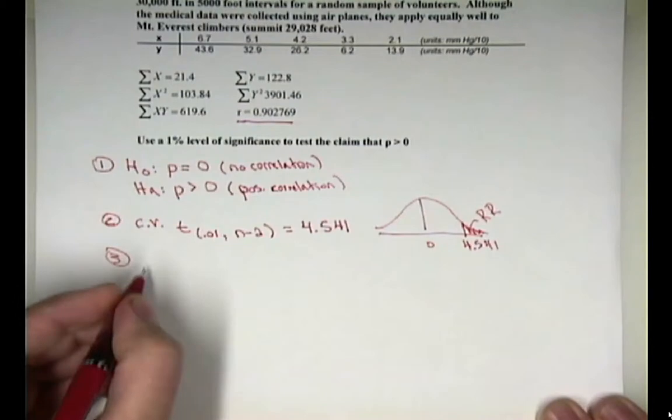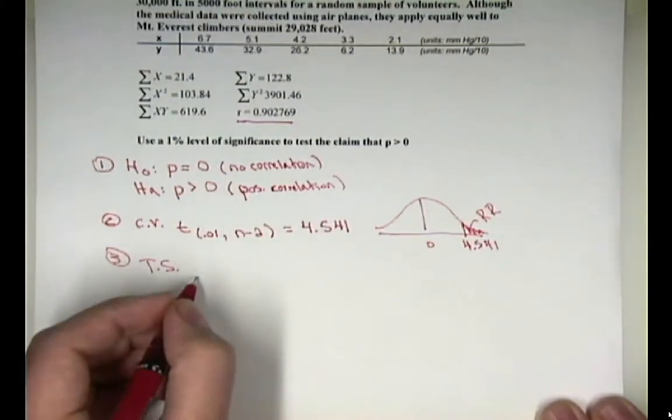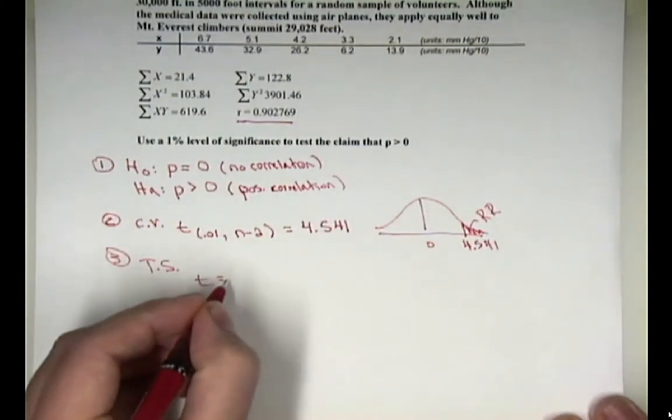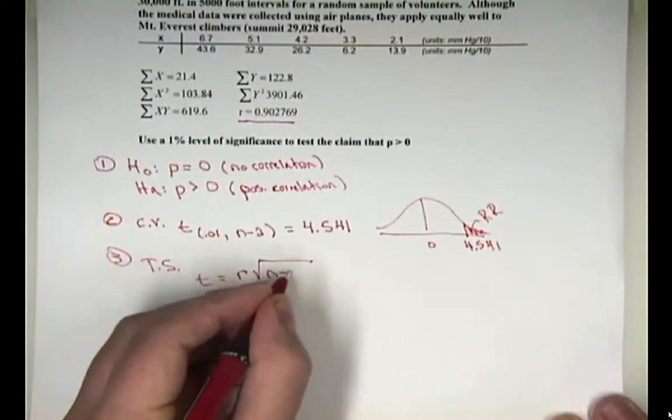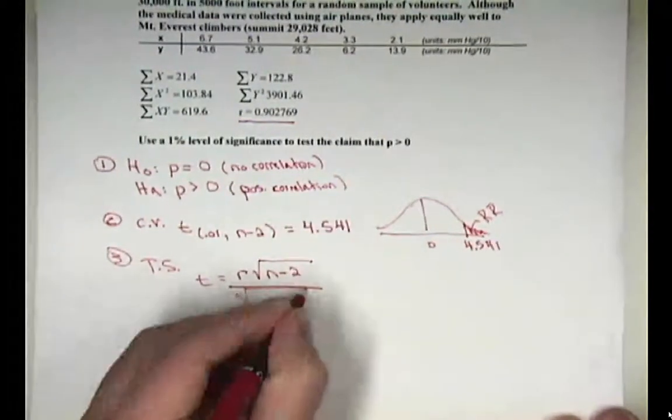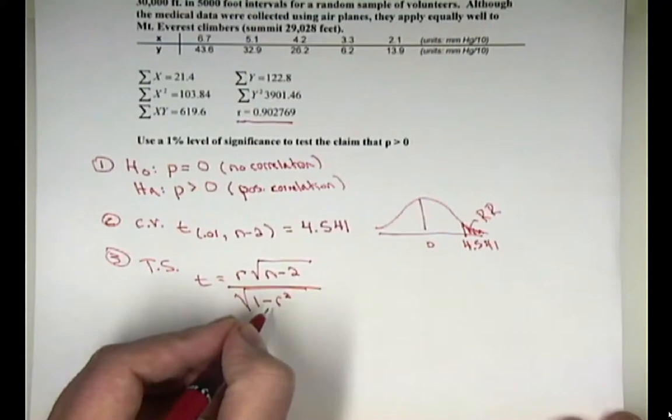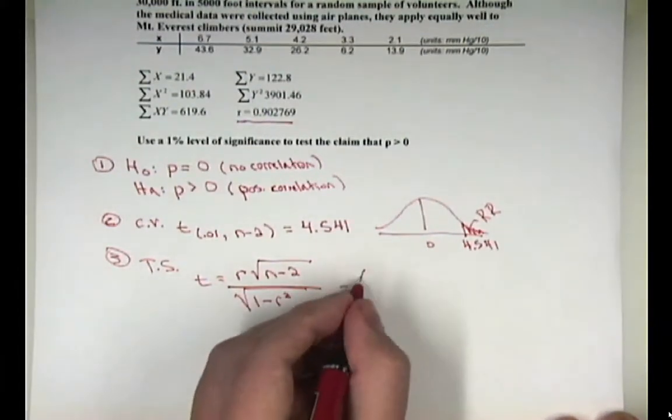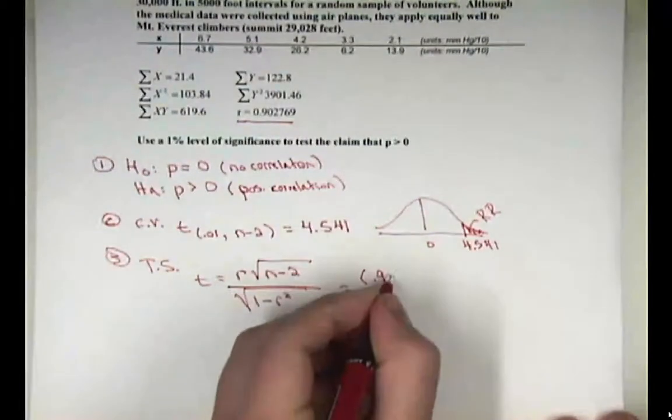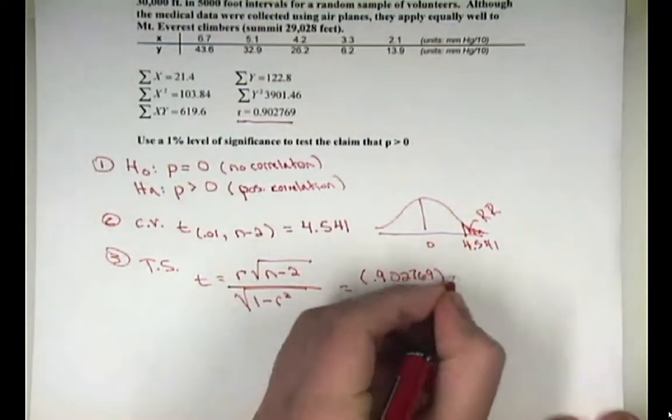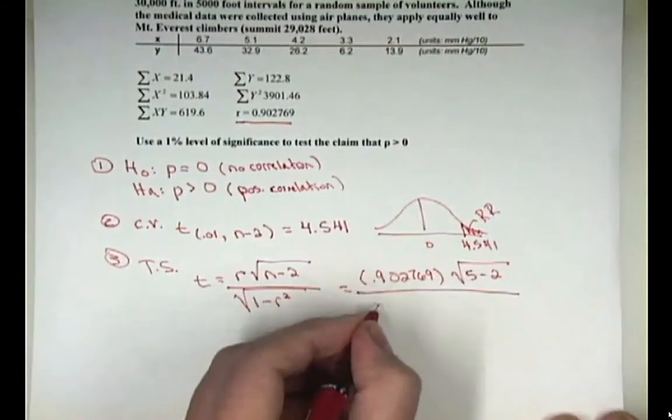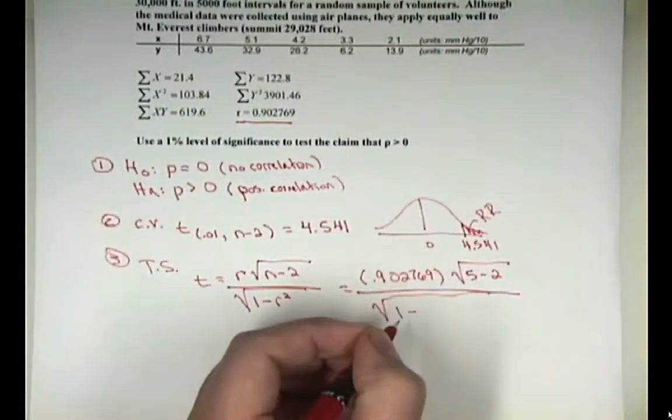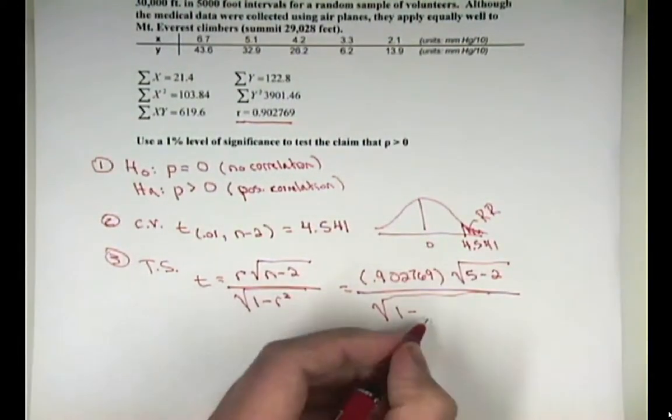Step three in the critical value method is to calculate your test statistic. Our test statistic is t equals r, the correlation coefficient for the sample, times the square root of n minus two over the square root of one minus r squared. Remember, r squared is the coefficient of determination. So we'll plug everything in here.